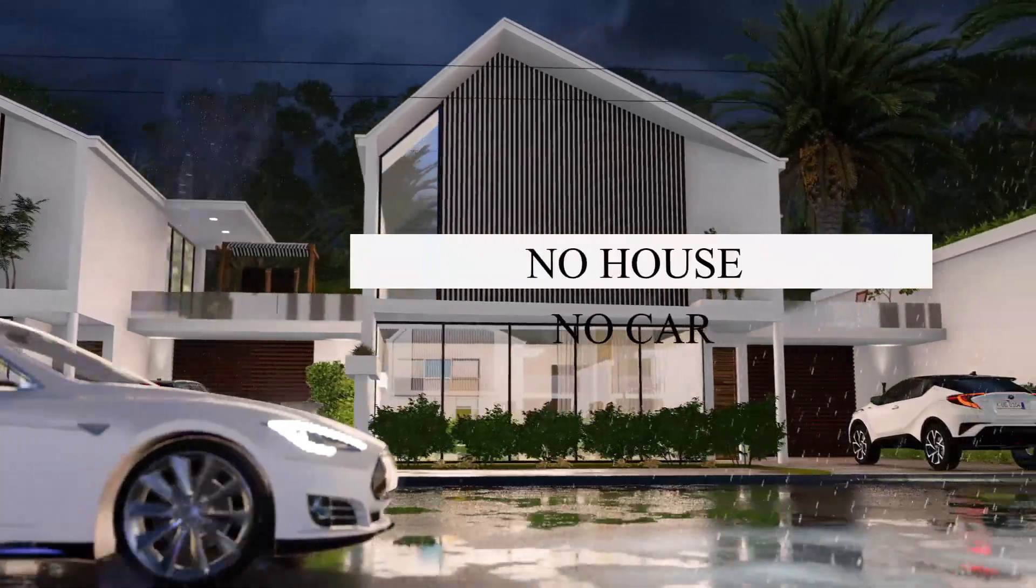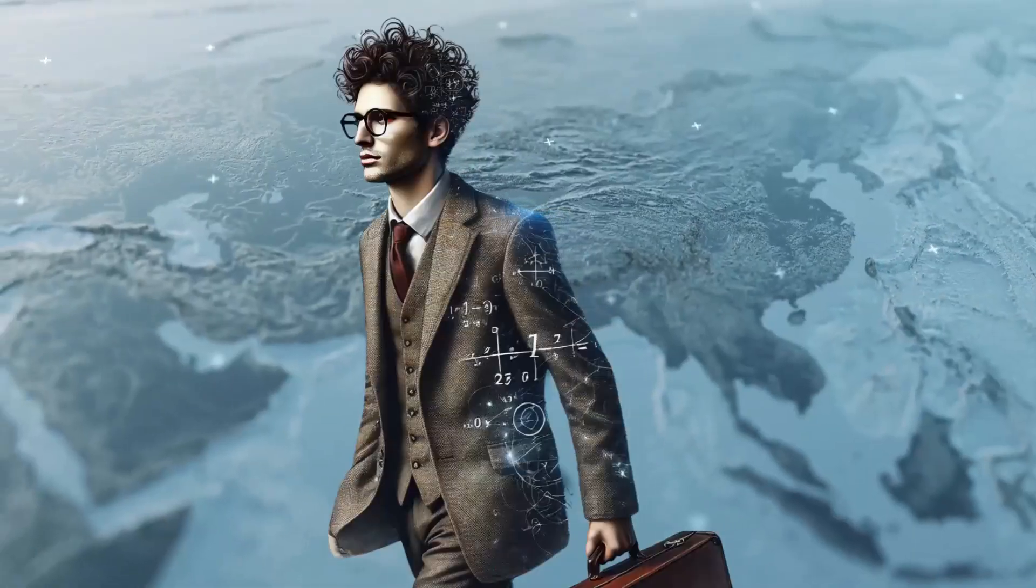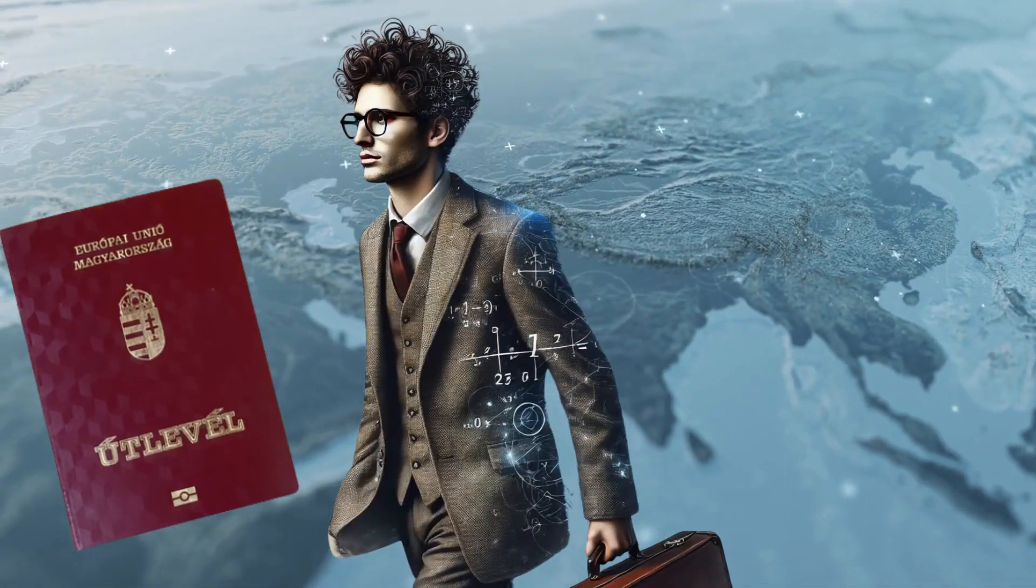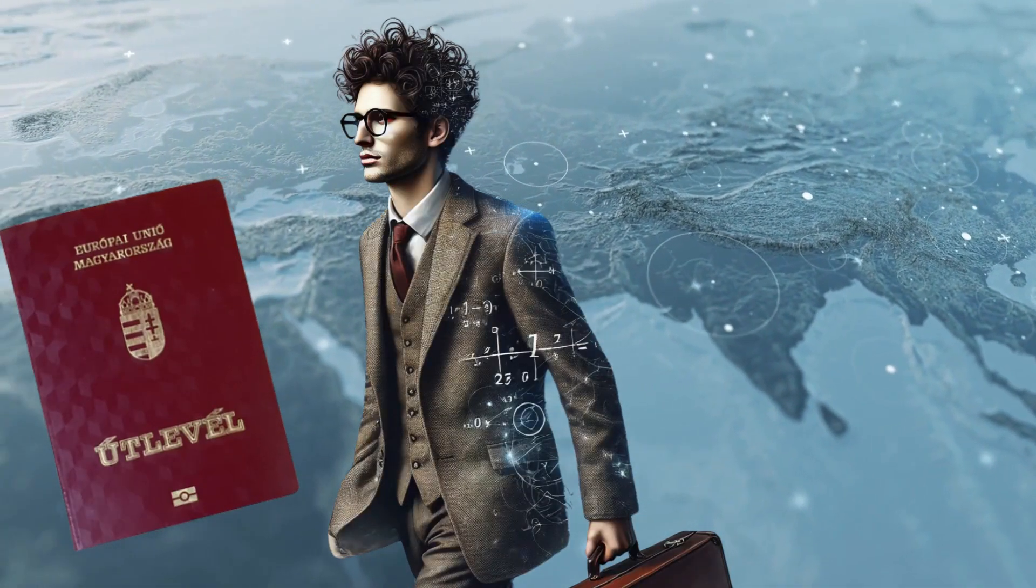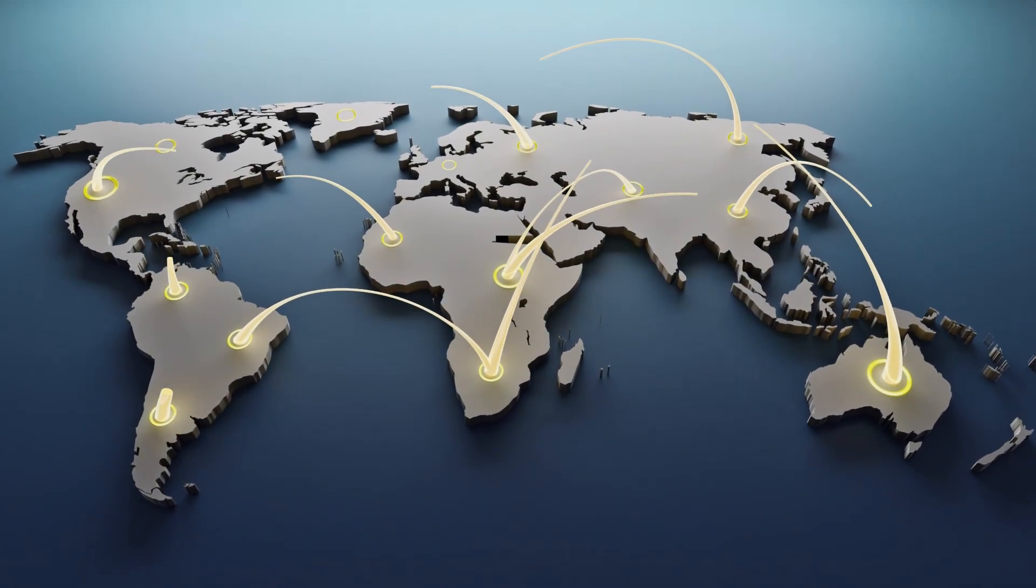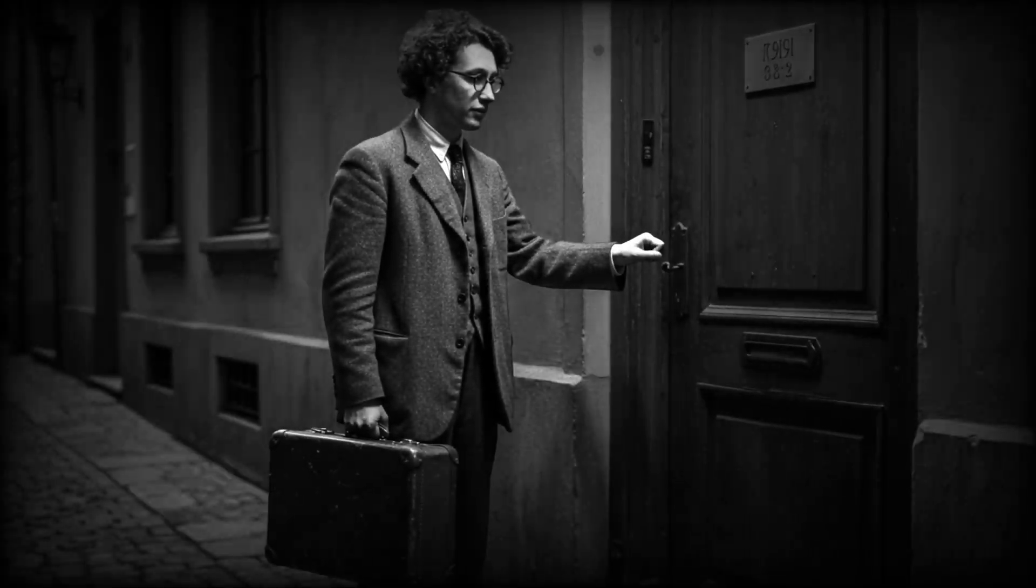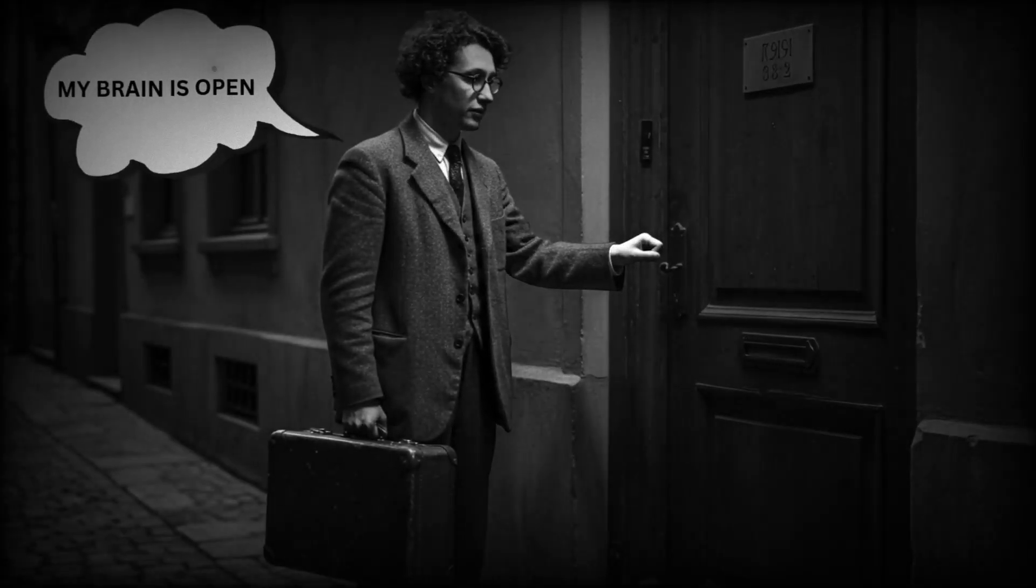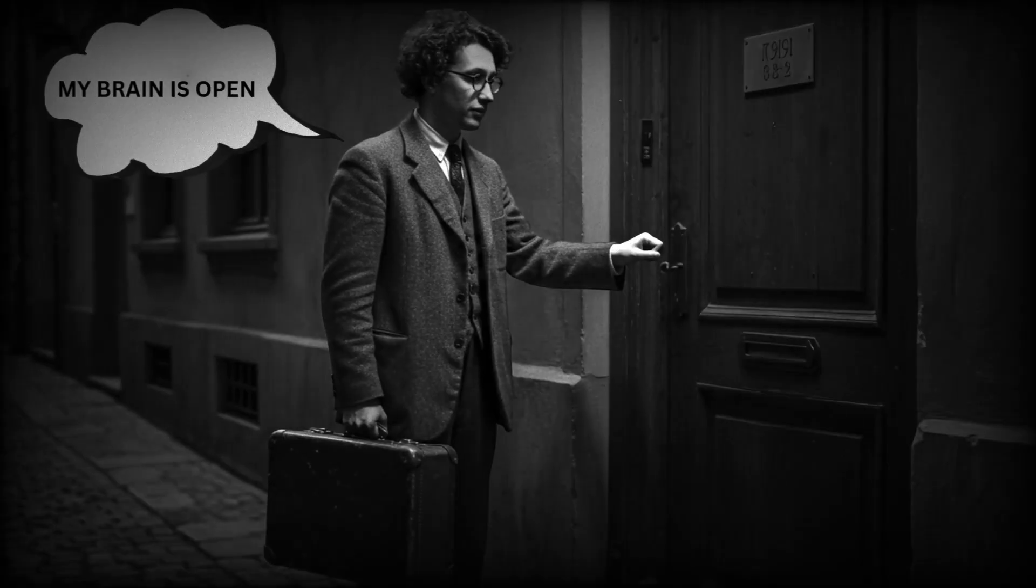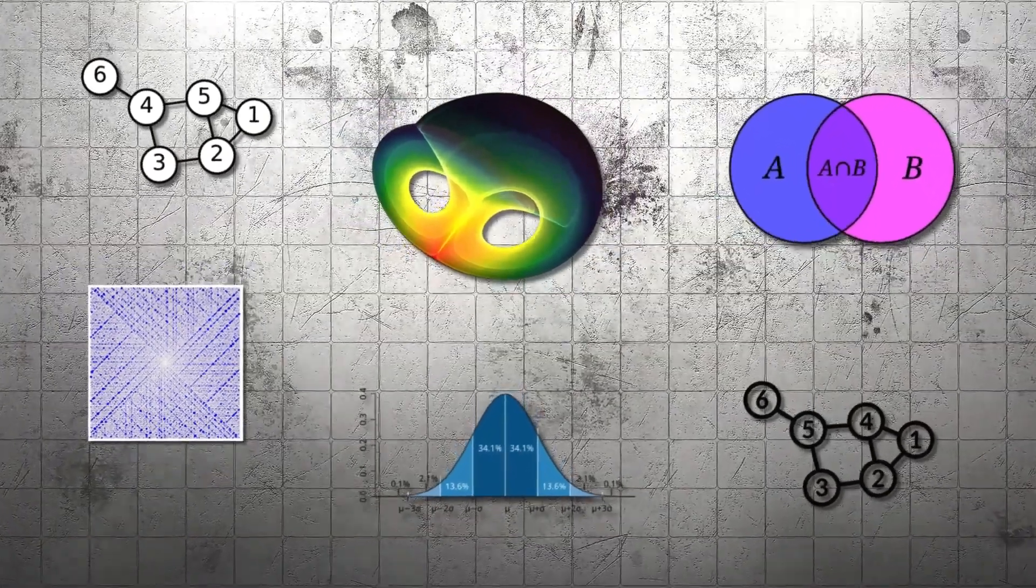Paul Erdos didn't own a house, he didn't own a car, he didn't even have a permanent office. What he did have was a suitcase, a passport and an unstoppable need to solve problems. From Budapest to Princeton, from Israel to Moscow, Erdos travelled across the world like a mathematical nomad, appearing at the doorsteps of fellow mathematicians with one simple phrase: my brain is open. And when Erdos's brain was open, mathematics itself changed.